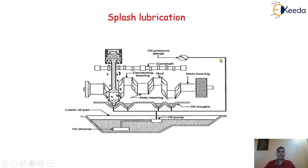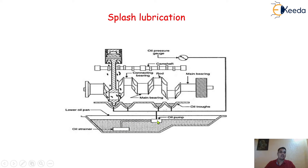With the help of this diagram, we are going to discuss about the splash lubrication system and understand why it is called the splash lubrication. Similarly, the oil reservoir or oil wet sump is there where the amount of lubricant oil can be stored. There is one oil strainer, and from the oil strainer, the initial impurities present in the oil will be removed.